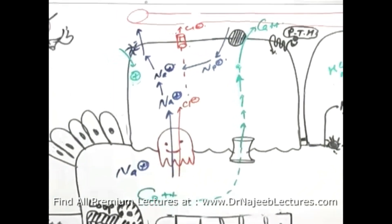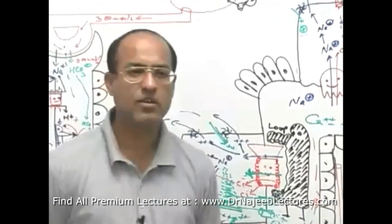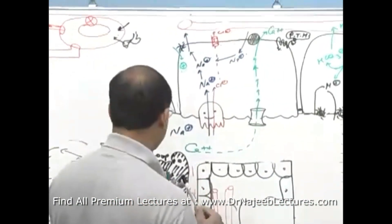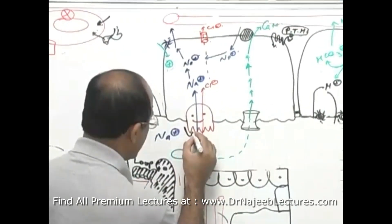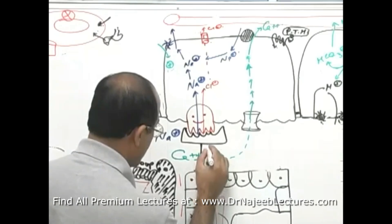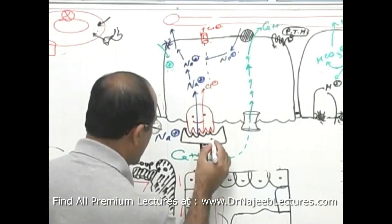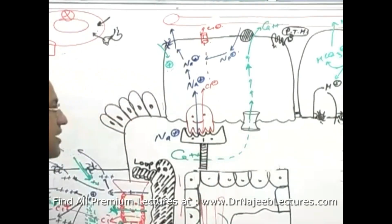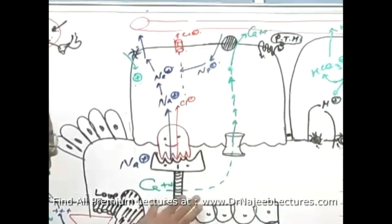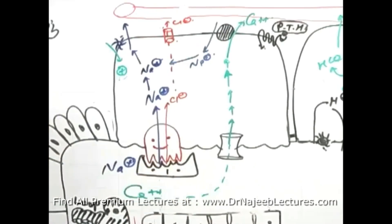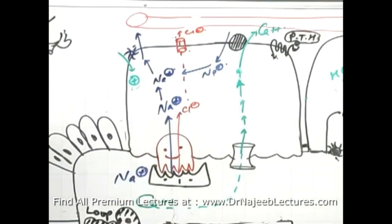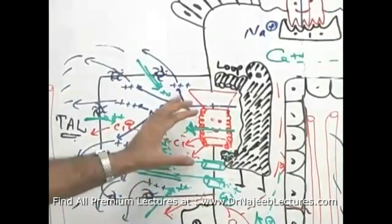Now let's see what happens when we apply a special type of group of drugs called thiazide drugs. This drug is a thiazide drug — it may be hydrochlorothiazide or thiazide-like drugs. What these drugs really do is bind with the sodium chloride co-transporters, also called sodium chloride symports. Compare this with the sodium-potassium-2-chloride co-transporter.